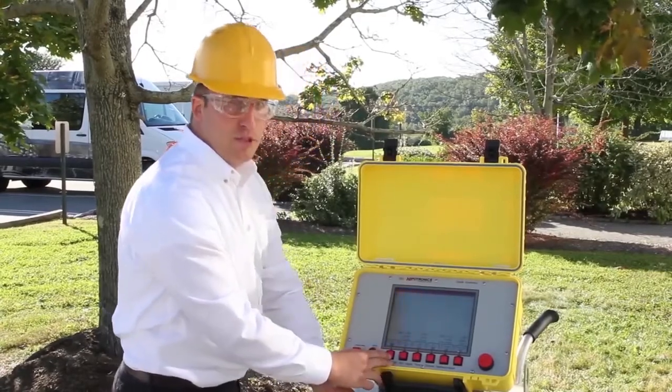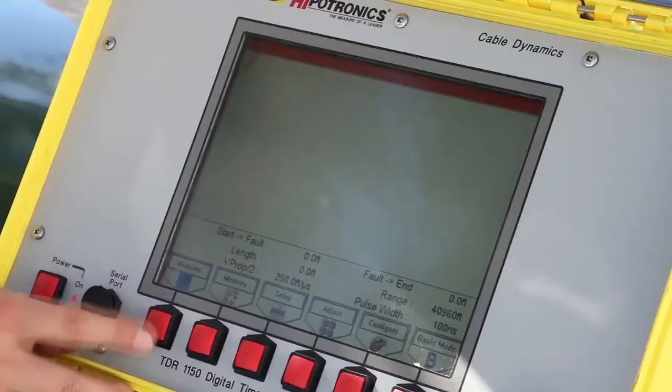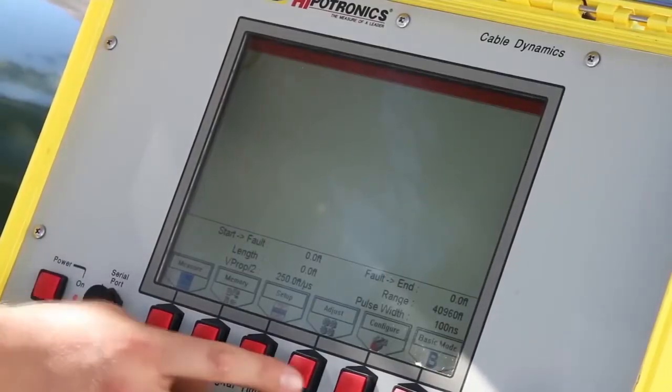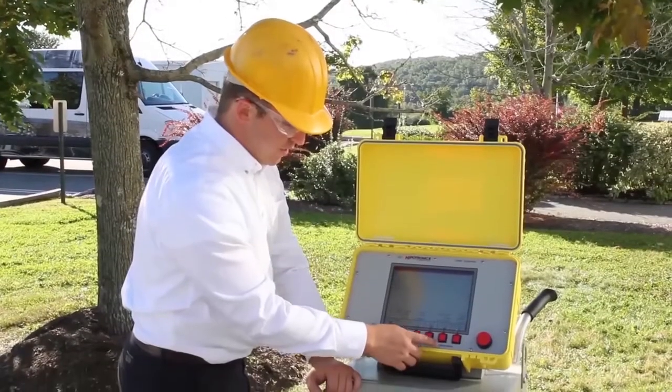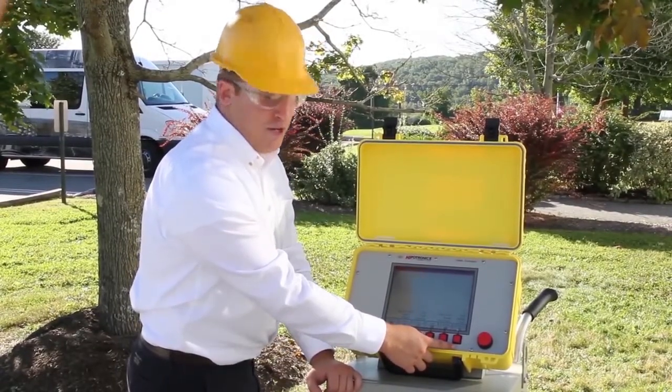Next, the TDR will display the advanced mode menu options. From left to right, we have measure, memory, setup, adjust, configure, and basic mode. Pressing basic mode will take you back to the basic mode menu.